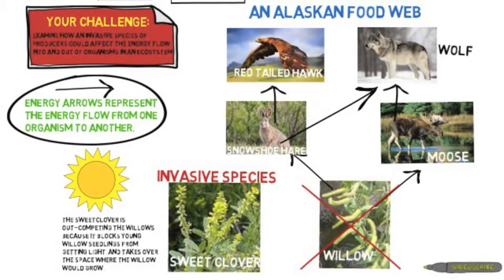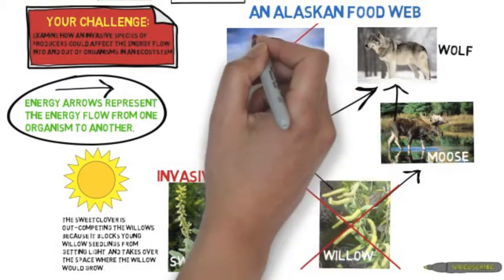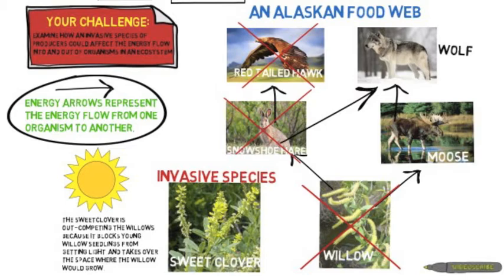Two organisms rely heavily on the willow for food: the snowshoe hare and the moose. The snowshoe hare has nothing to eat or consume, so its population decreases. In turn, the red-tailed hawk has nothing to eat and doesn't get any energy to live and survive, so its population decreases as well.